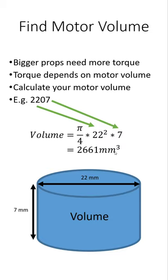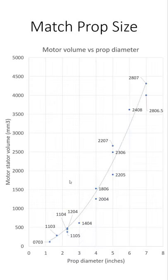Once you've got that volume in millimeters cubed, you come and look at this graph. You read across from the motor volume and down to find the prop diameter.